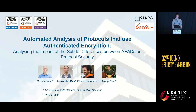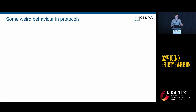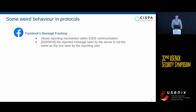Let me start with some weird behaviors and attacks we saw in protocols. The Facebook message ranking protocol is a mechanism to report abuse in end-to-end encrypted communication, specifically Facebook Messenger. Krabs et al. in 2018 found an attack where the message reported by the user is different from the message seen by the server, essentially rendering the report mechanism useless.